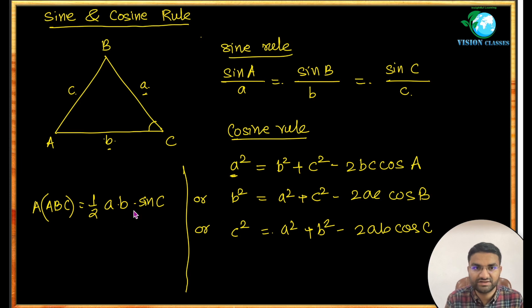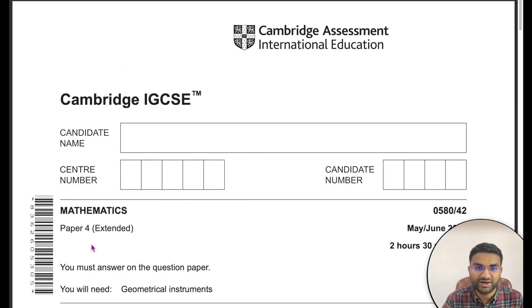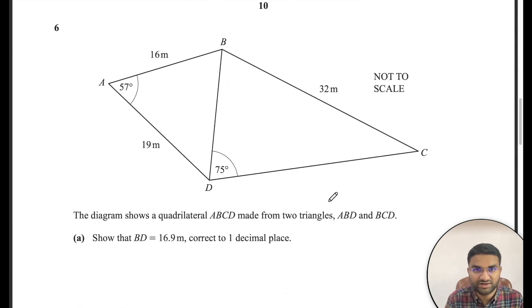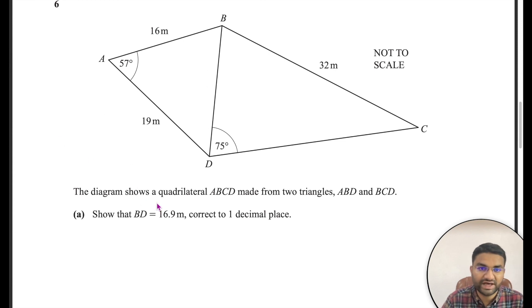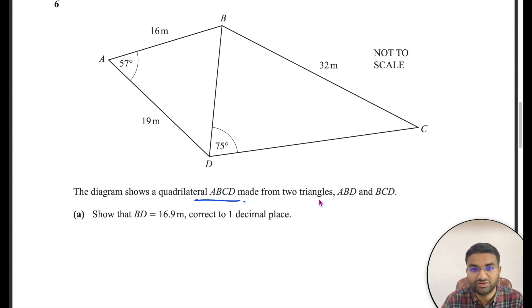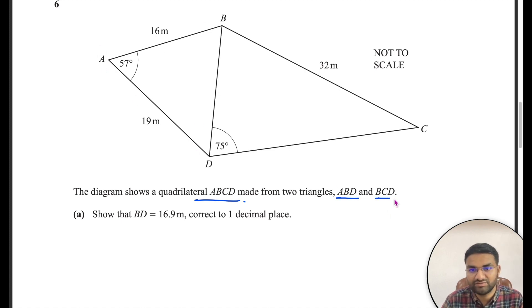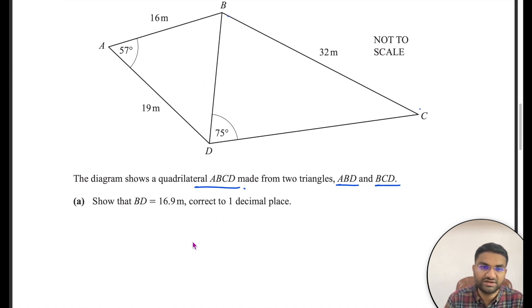Let's look at an IGCSE Paper 4 question from May/June 2021, question number six. The diagram shows a quadrilateral ABCD made from two triangles: triangle ABD and triangle BCD.